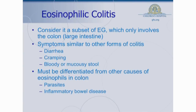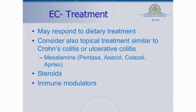Eosinophilic colitis can be thought of almost as just a subset of eosinophilic gastroenteritis — it's basically EG that involves only the colon. The symptoms you get with EC are similar to what you'd have with Crohn's colitis, infectious colitis like salmonella, or ulcerative colitis. It's important to try to differentiate it from those causes. Sometimes we even see increased numbers of eosinophils with other causes of colitis, like inflammatory bowel disease, which can make it more difficult to nail down the diagnosis. Treatment may respond to dietary therapy. You may also be able to use topical therapy for the colon — things like mesalamine, similar to what we use for ulcerative colitis or Crohn's disease. It tends to respond well to steroids, and the immune modulators may have a role as well.